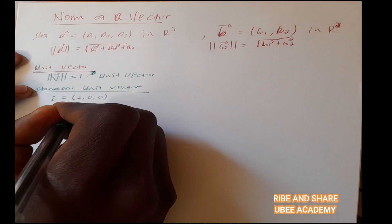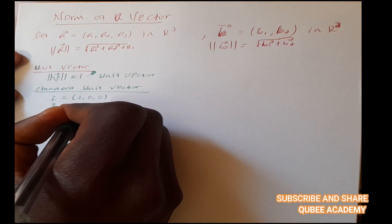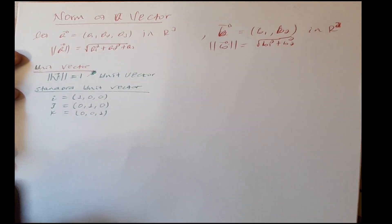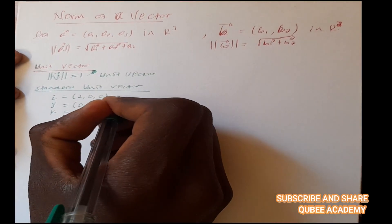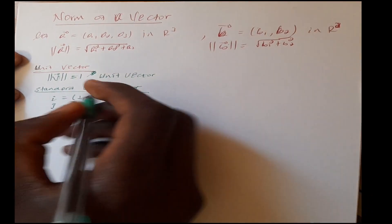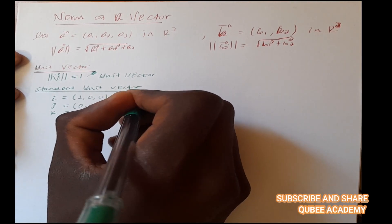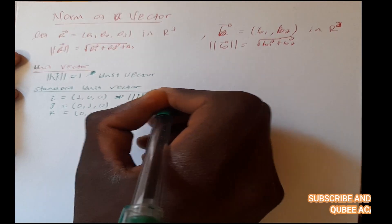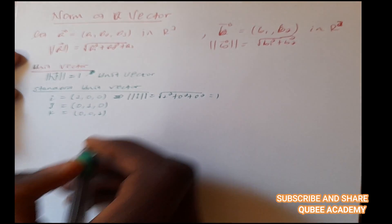We call j a standard unit vector. j is represented as (0, 1, 0). We can see this as a standard unit vector with magnitude 1. For example, the magnitude of i: this is the square root of 1² plus 0² plus 0², which equals 1.